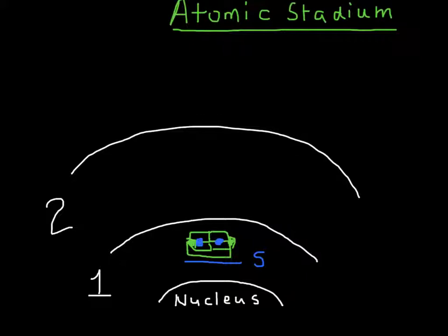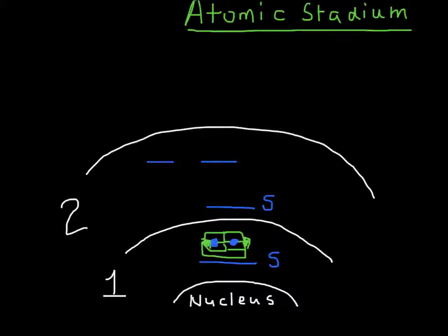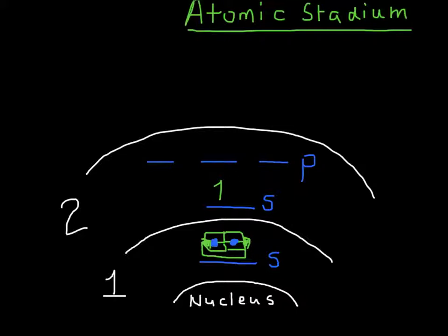In energy level two, we have row S and row P. Remember, there are three places to sit in the P row, so we'll have three lines in the P row. As electrons come to sit in the seats, electron number three sits in the first available spot in the S. The next electron also wants the best available seat, which is right there in the S. So the 2S has two electrons in it.